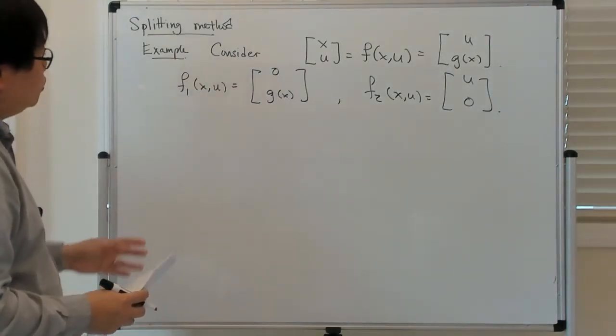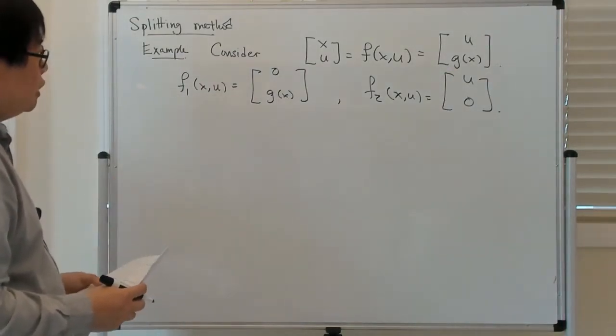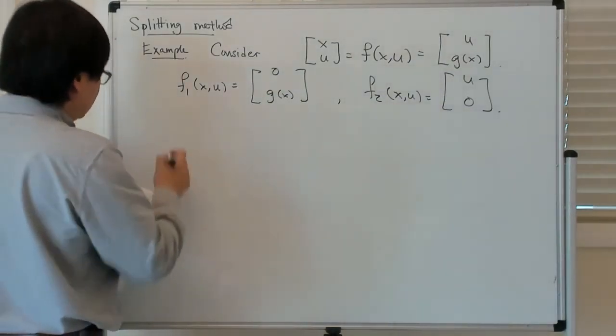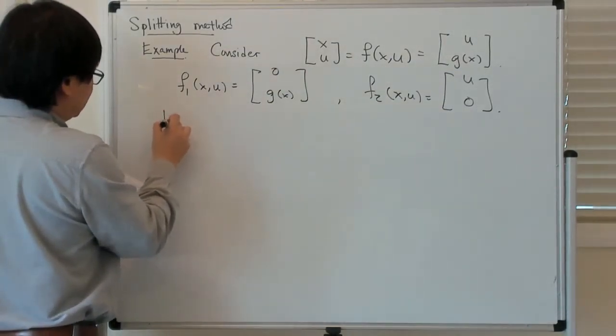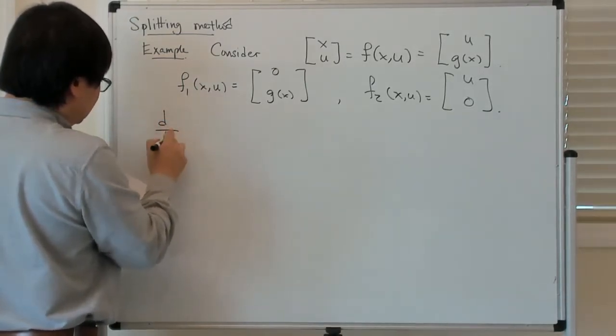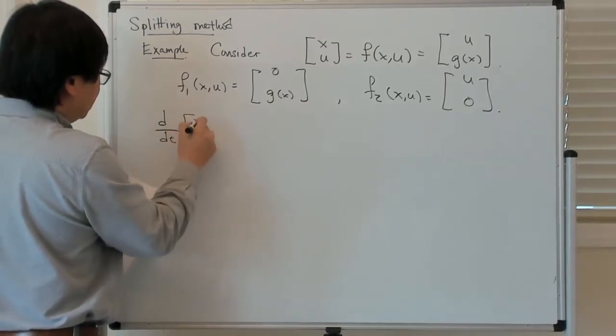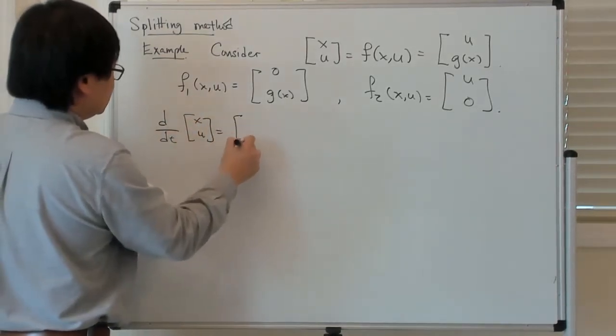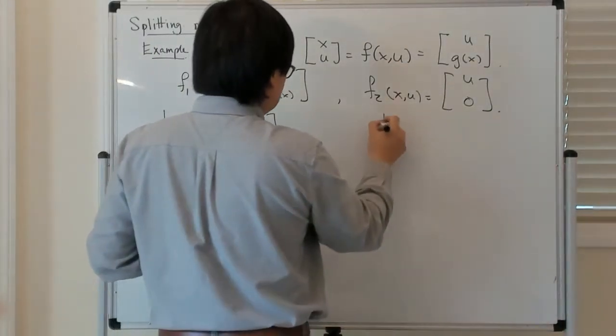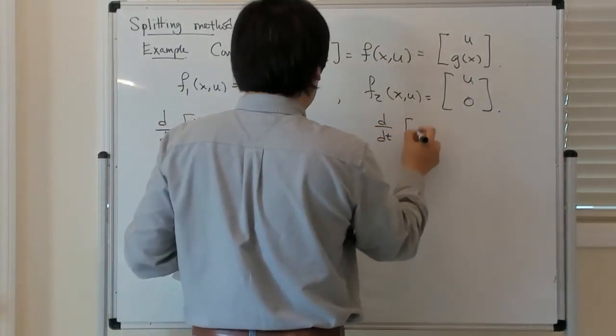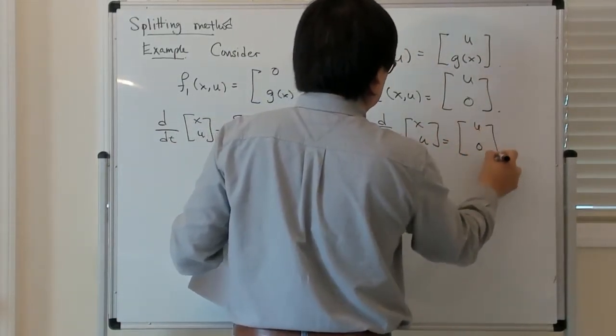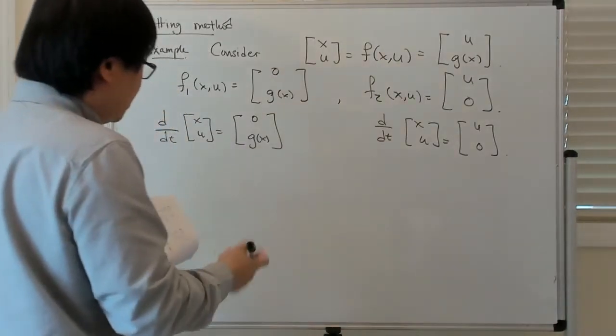So let's try to look at the corresponding splitting method. In order to construct the splitting method, I have to solve the equation which says d dt of x u is equal to 0 g of x, and I also have to solve the equation which says d dt of x u is equal to u 0, and then compose it.